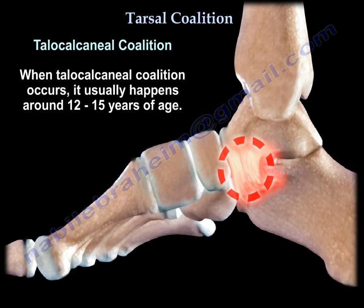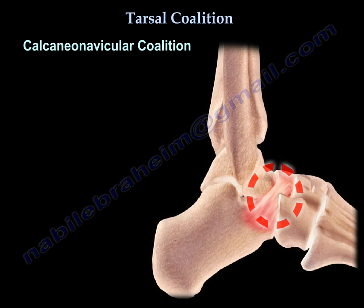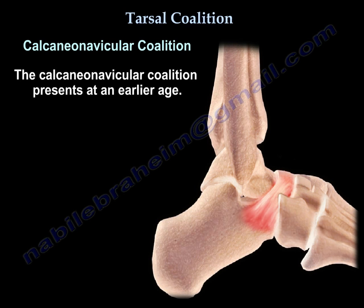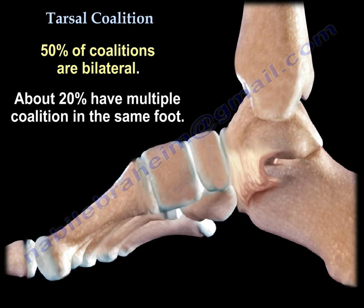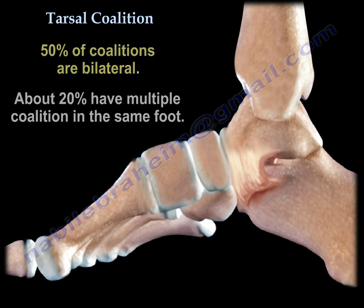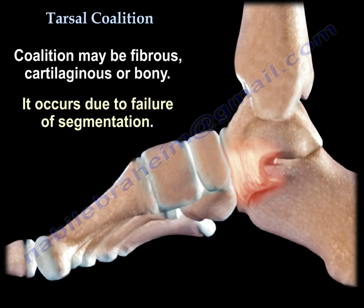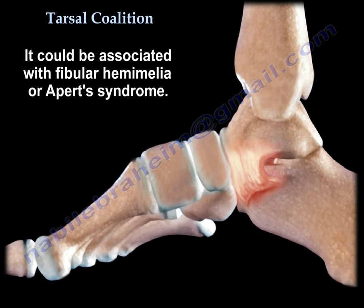A talocalcaneal coalition usually occurs between the ages of 12 and 15 years. A calcaneonavicular coalition presents at an earlier age. 50% of coalitions are bilateral, and about 20% have multiple coalitions in the same foot. Coalitions may be fibrous, cartilaginous or bony. It is believed to occur due to failure of segmentation, and could be associated with fibular hemimelia or Apert syndrome.